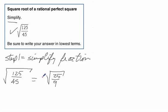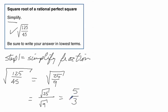Now this problem gets much easier because we can split that up — that's the same thing as the square root of 25 over the square root of 9. We can simplify those into 5 over 3. So the square root of 125 over 45 is the same thing as 5 over 3. That's our answer.